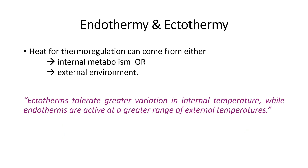Endothermy and ectothermy: heat for thermoregulation can come from either internal metabolism or external environment. Ectotherms tolerate greater variation in internal temperature, changing their body temperature according to the external environment. Endotherms maintain their body temperature even when the external environment temperature changes.